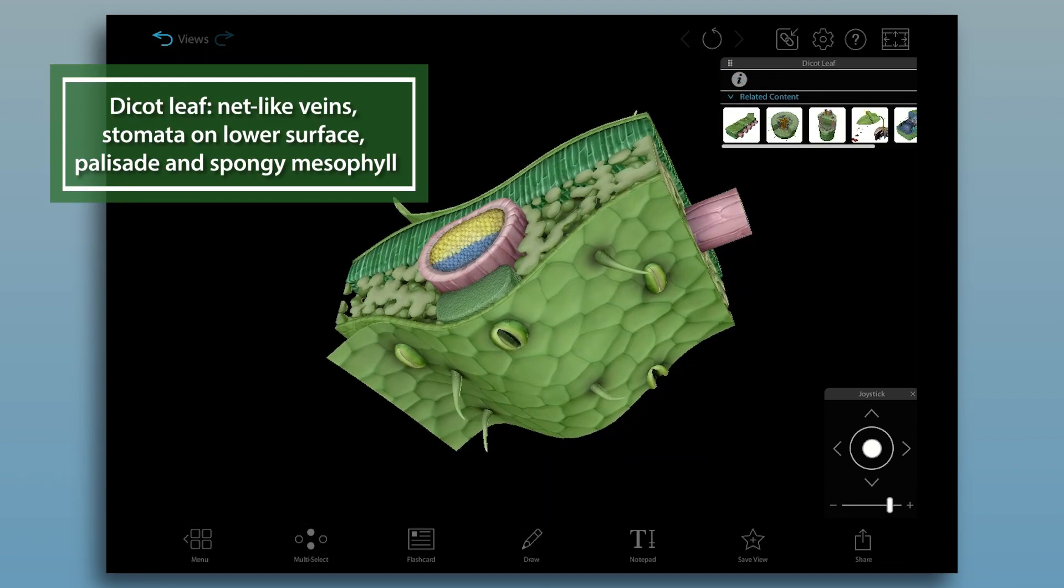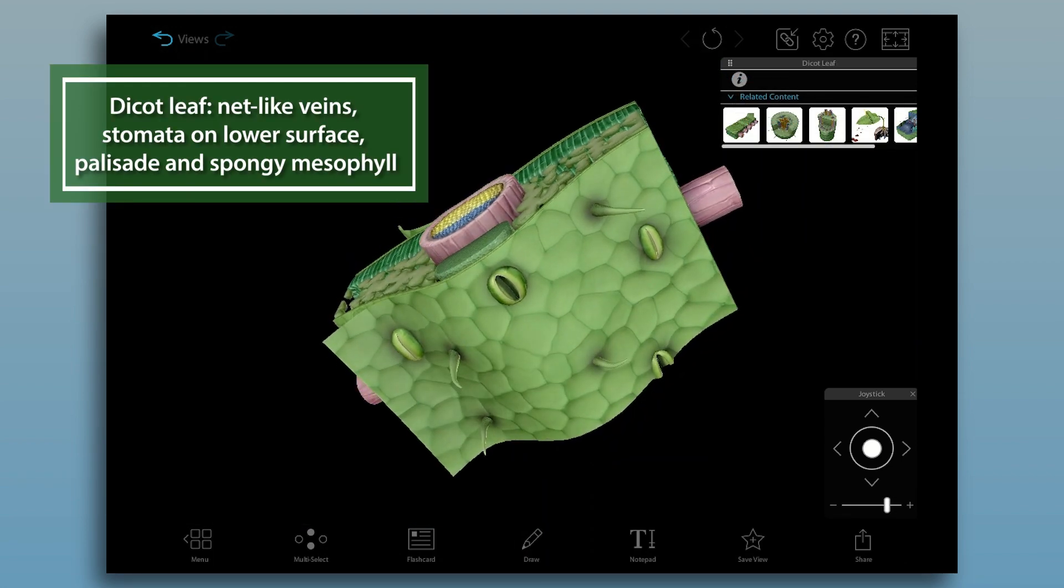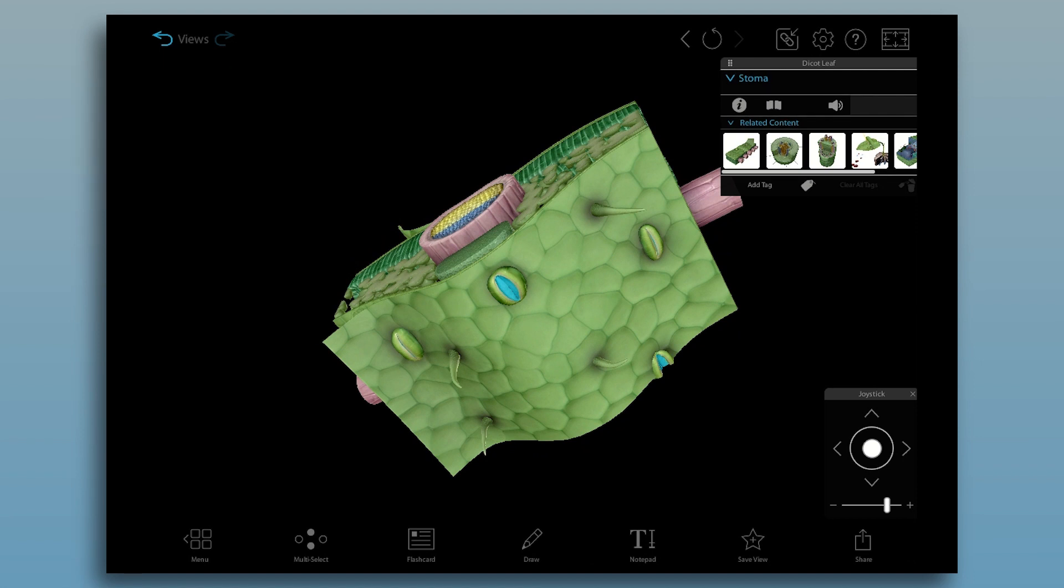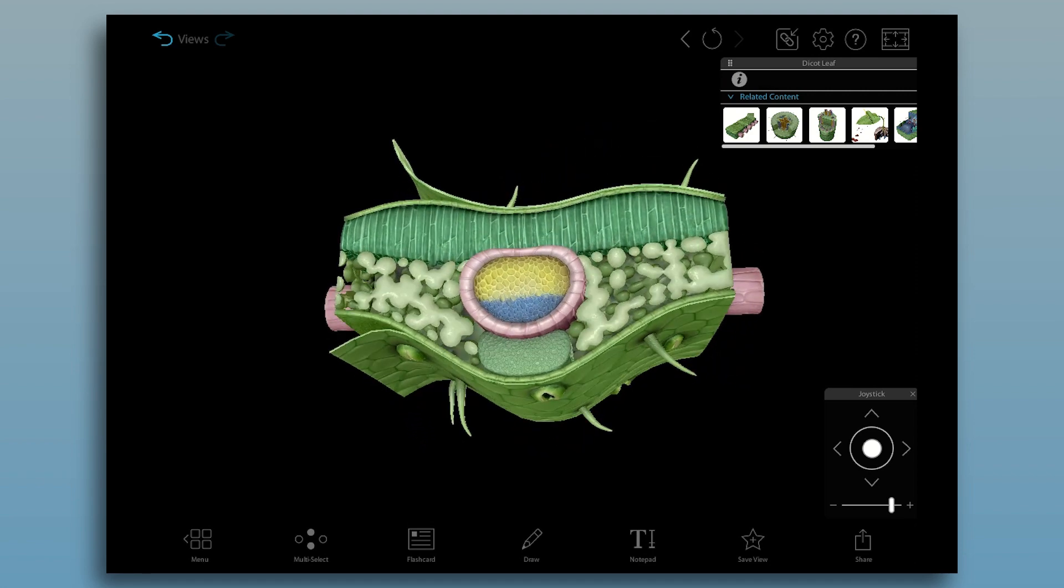Dicot leaves have net-like vein patterns. They tend to have the majority of their stomata on the lower surface of the leaf. This helps the plant to conserve water while having most of the stomata open.